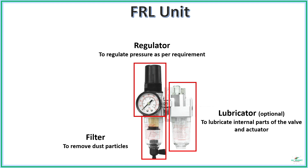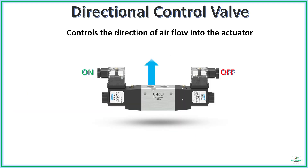The regulated air is now passed to the directional control valves, which are typically electronically controlled. These valves decide in which direction the air needs to flow inside the actuator.